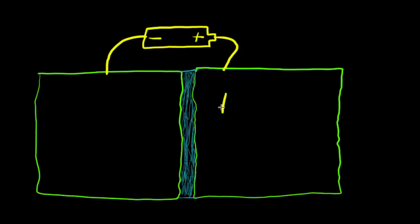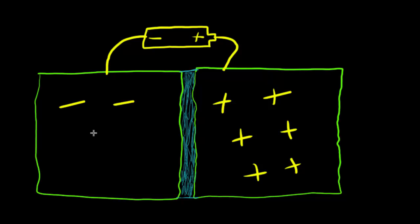Meanwhile, the other plate gained many electrons — negative charges — so it became more negatively charged. As we kept the battery plugged into the capacitor, these charges kept separating and grew a bigger difference between the two plates.